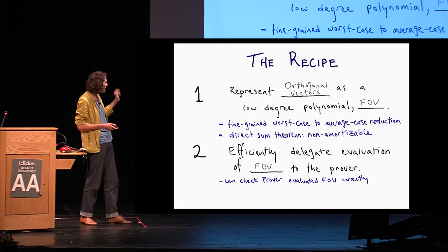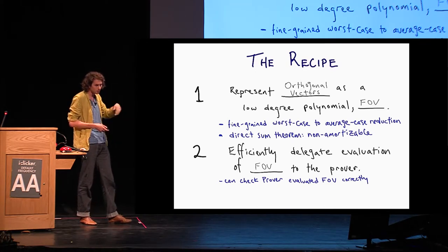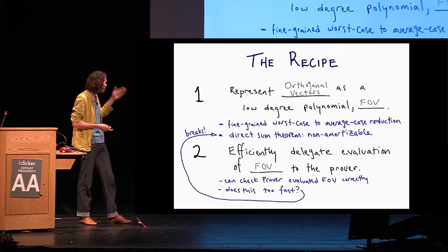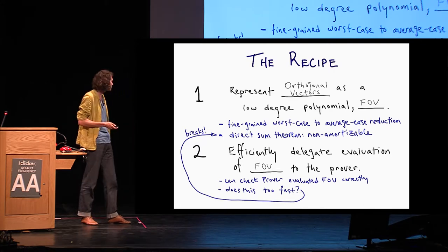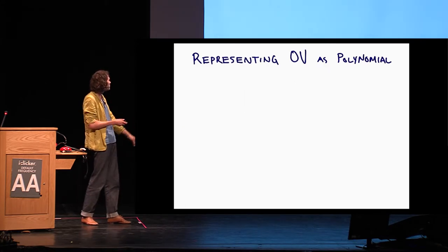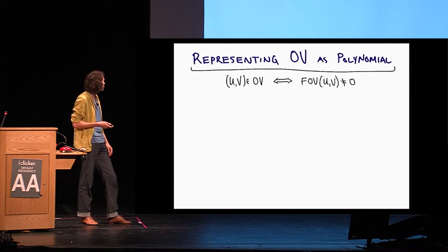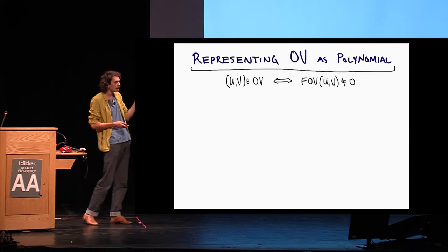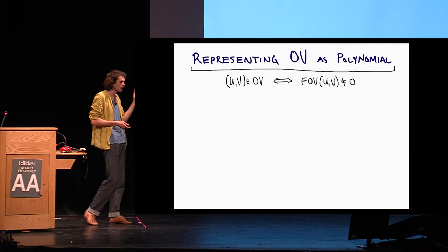Second, we can prove a direct-sum theorem, which is a fancy way of saying the problem is not amortizable. And then we'll proceed to the second step, which is efficiently delegate evaluation of FOV to the prover, using some tricks from Ryan Williams and basic sum-check protocol from, say, IP equals PSPACE. And this will allow the verifier to check that the prover actually verified this hard-to-batch polynomial. And so if he can do this too quickly, he broke the earlier conjecture. So how are we going to represent orthogonal vectors as a polynomial? What does this mean in the first place? This means we're going to say that it's represented as a polynomial if UV has orthogonal vectors, then this polynomial should not evaluate to zero. And otherwise, it should.